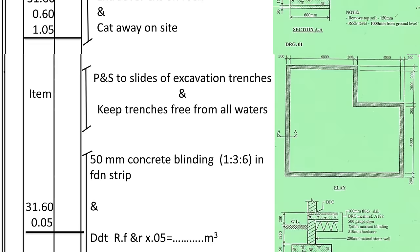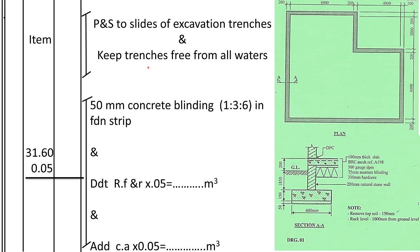We take off planking and strutting to the sides of the excavation trenches and keeping the trenches free from water. This is booked as an item because we cannot measure it from the drawings. In our country using the SMM we write 'item,' and the BQ will provide a provisional sum for it.